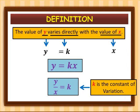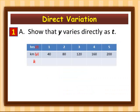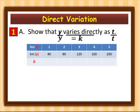Let's proceed to the first example: show that y varies directly as t. We are given a table of the number of hours traveled by a car and its kilometers traveled, where k is the constant of variation. Since y varies directly as t, the equation is y is equal to k times t. Solving for k, we divide both sides by t, giving us k is equal to y over t.